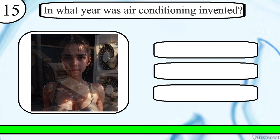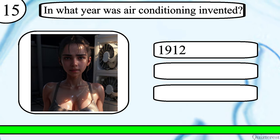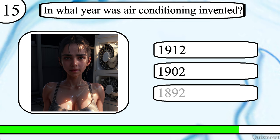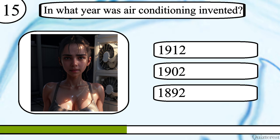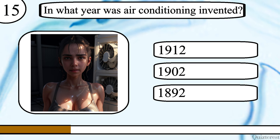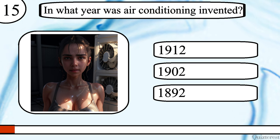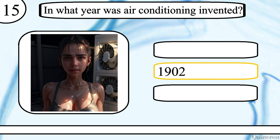Question 14. In what year was air conditioning invented? 1912, 1902 or 1892? The correct answer is 1902.